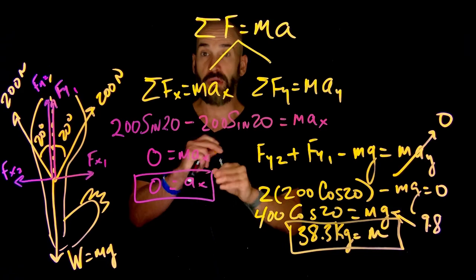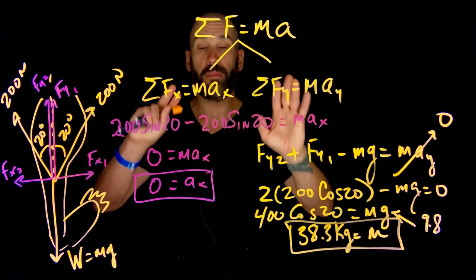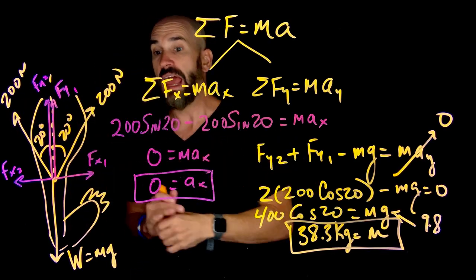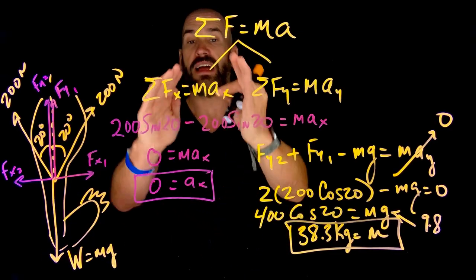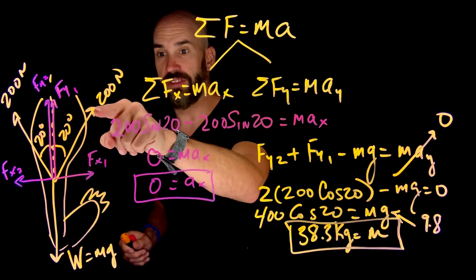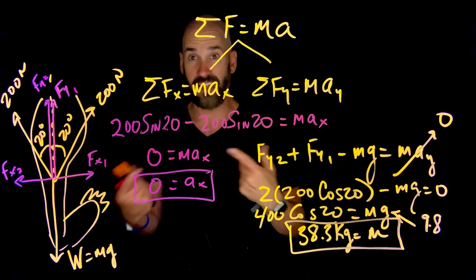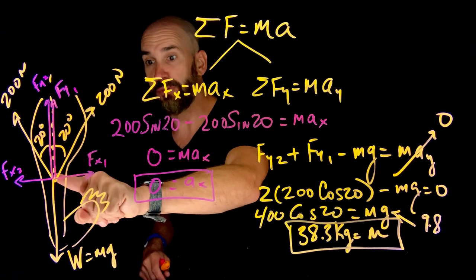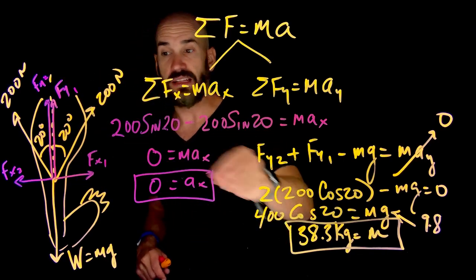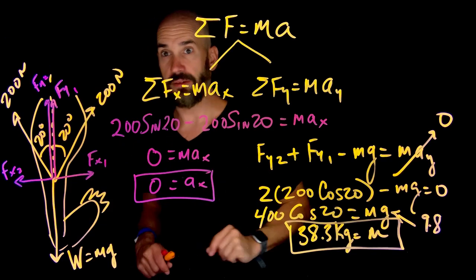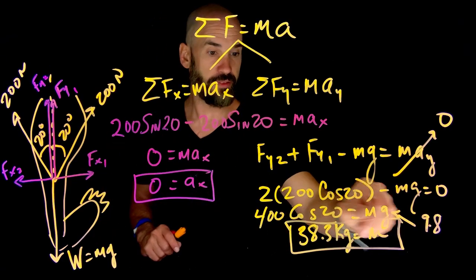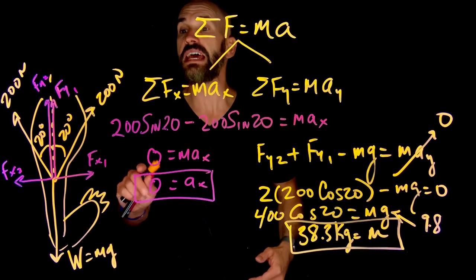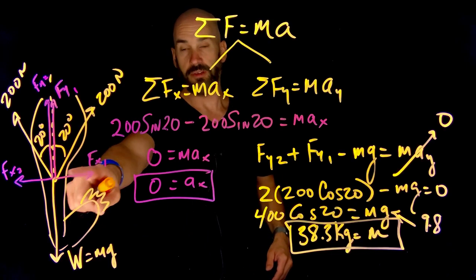To break down what happened: instead of worrying about just one dimension, we worried about two dimensions. These forces are applied partly in x and partly in y, and we also have a weight going down in the y direction. We analyzed the sum of forces in x — the x components canceled because the forces are symmetric — and then analyzed everything in the y dimension by adding the two upward muscle force components and subtracting the downward weight, solving for the mass needed to achieve constant velocity upward.